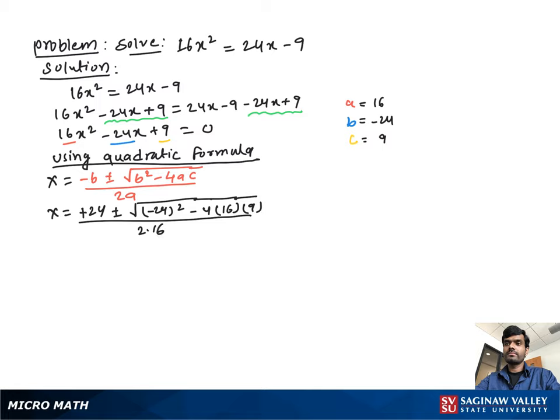Then x equal to 24 plus minus square root of negative 24 square which is equal to 576 minus 4 times 16 times 9 is equal to 576, over 2 times 16 is 32.